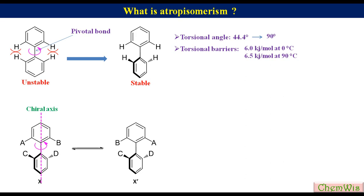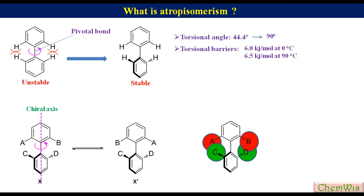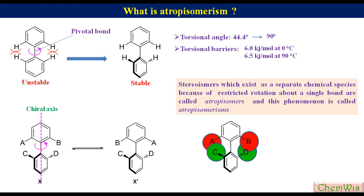The two enantiomers X and X prime are interconvertible by rotation of one of the two rings about the pivotal bond. X and X prime can be resolved and will show optical rotation if we can restrict the rotation about the pivotal bond. We can restrict this rotation by increasing the bulk of the ortho substituents. These stereoisomers which exist as separate chemical species because of restricted rotation about a single bond are called atropisomers, and this phenomenon is called atropisomerism.